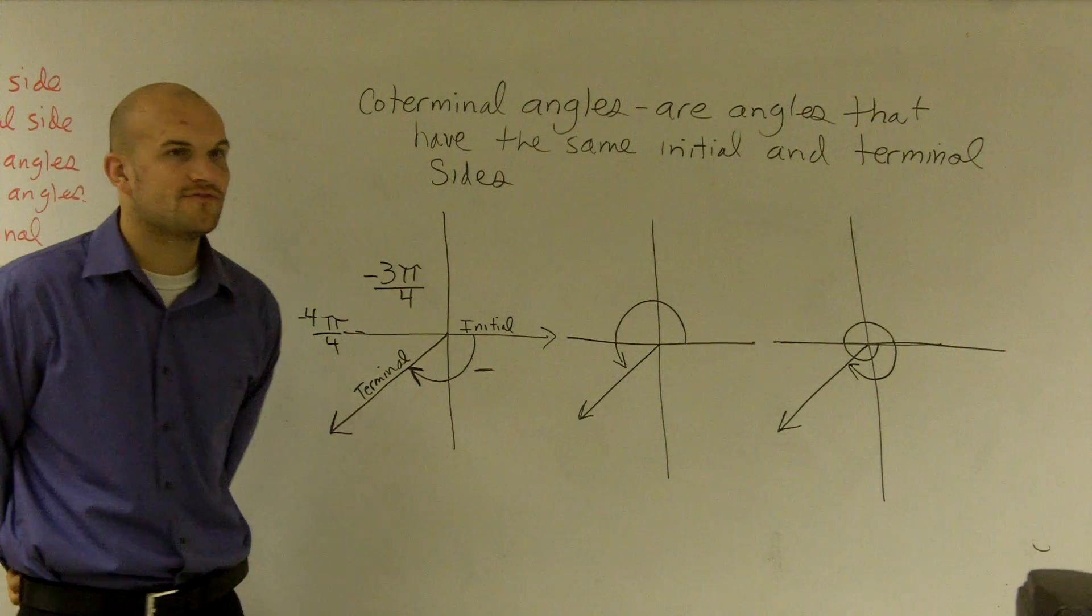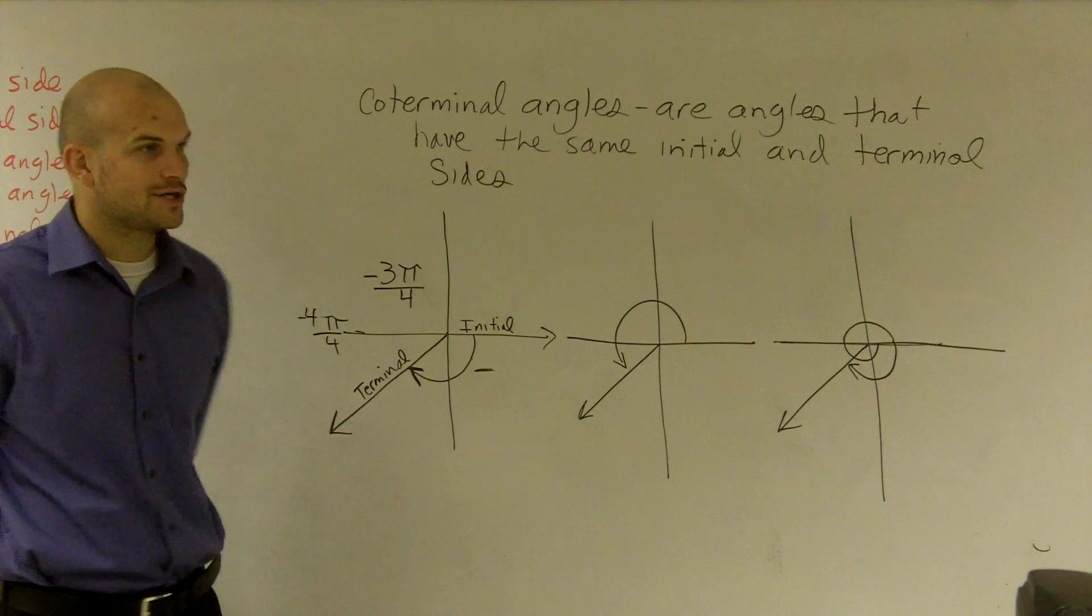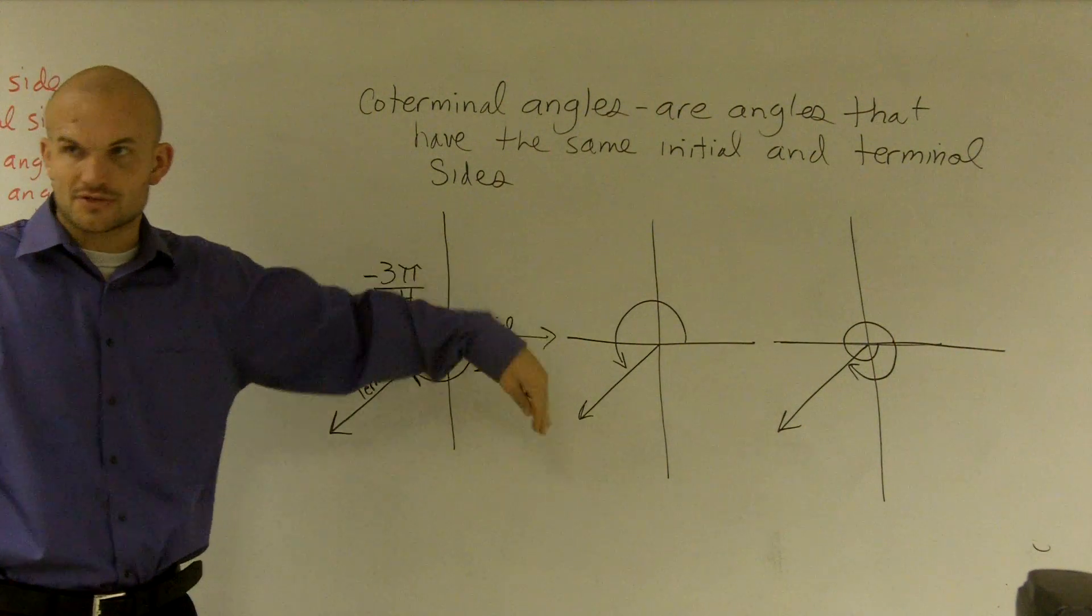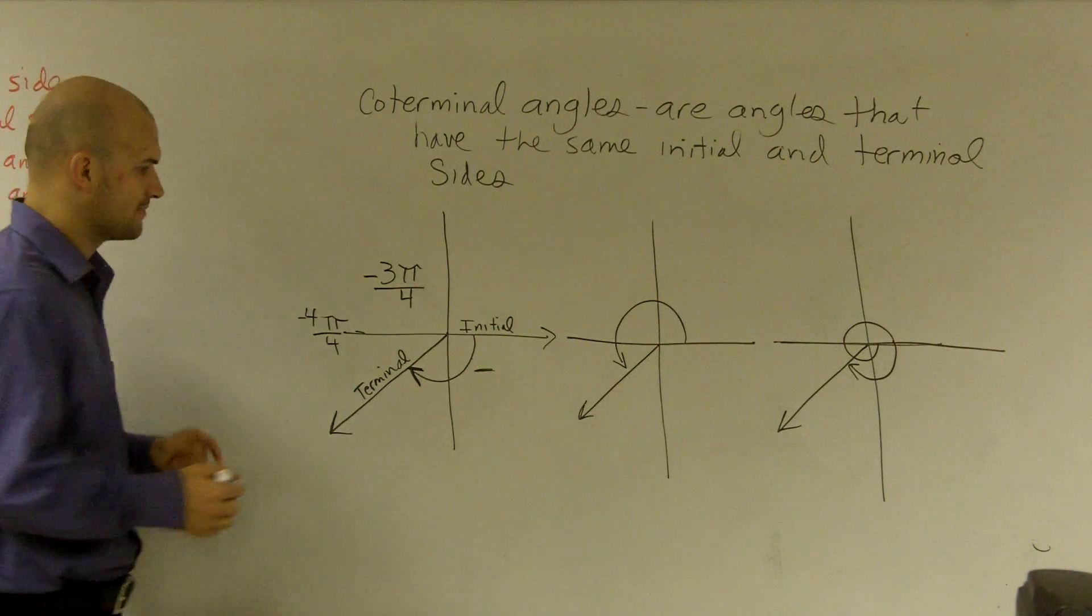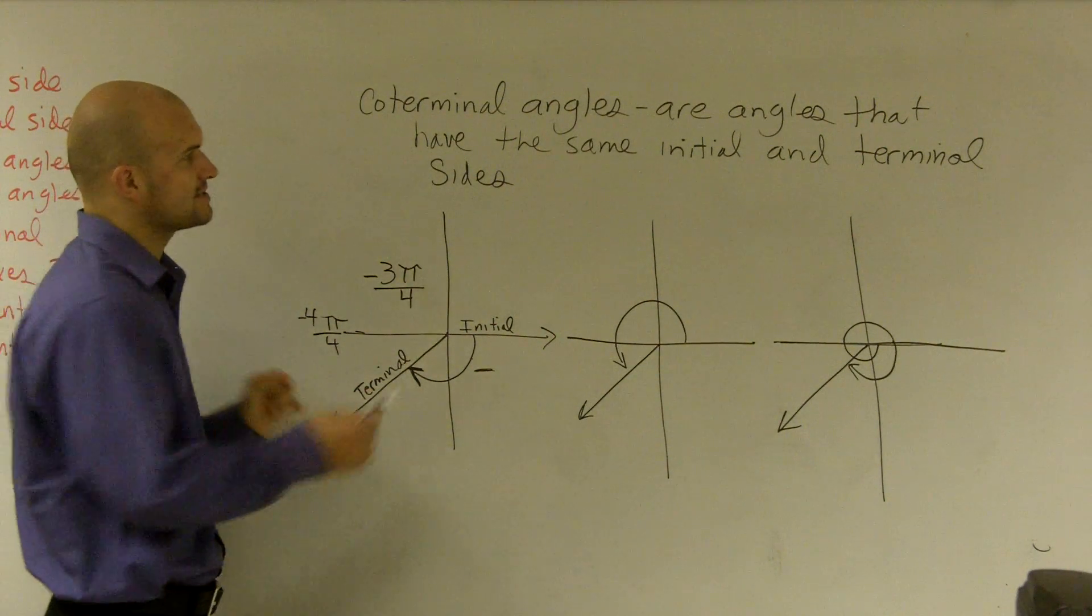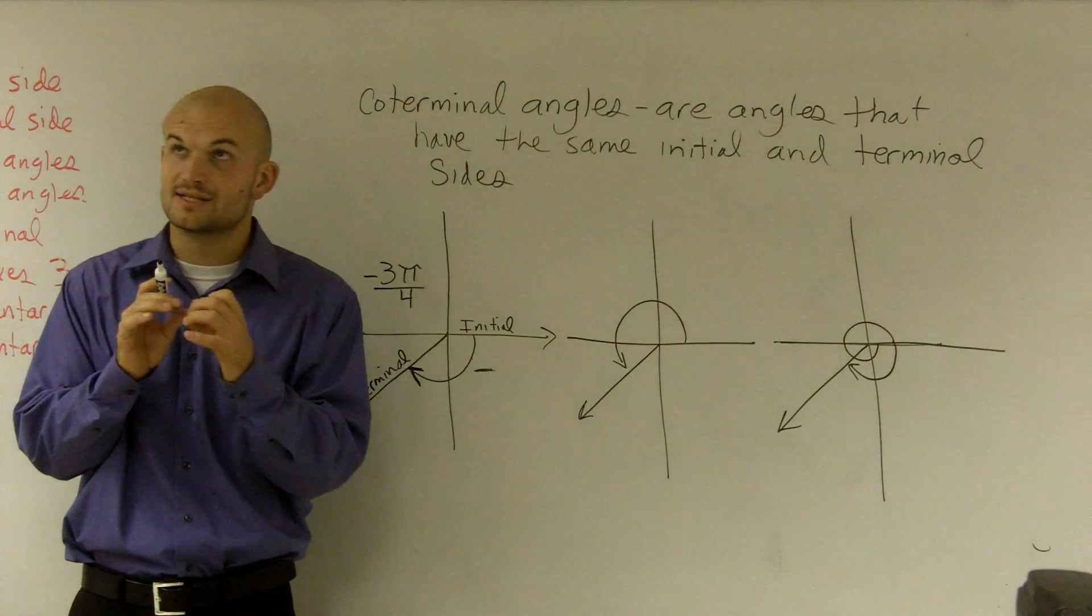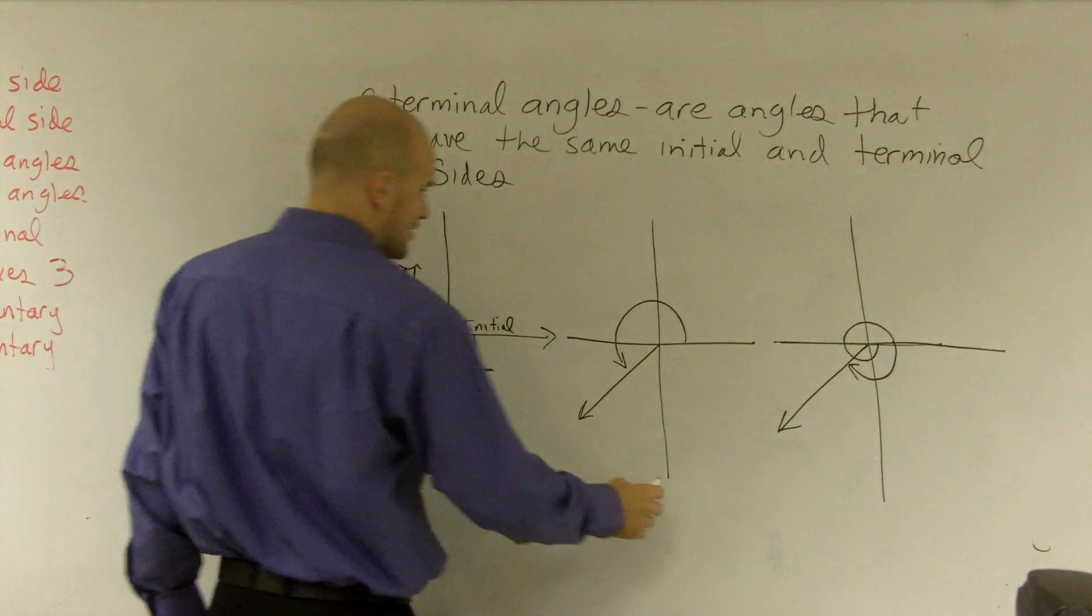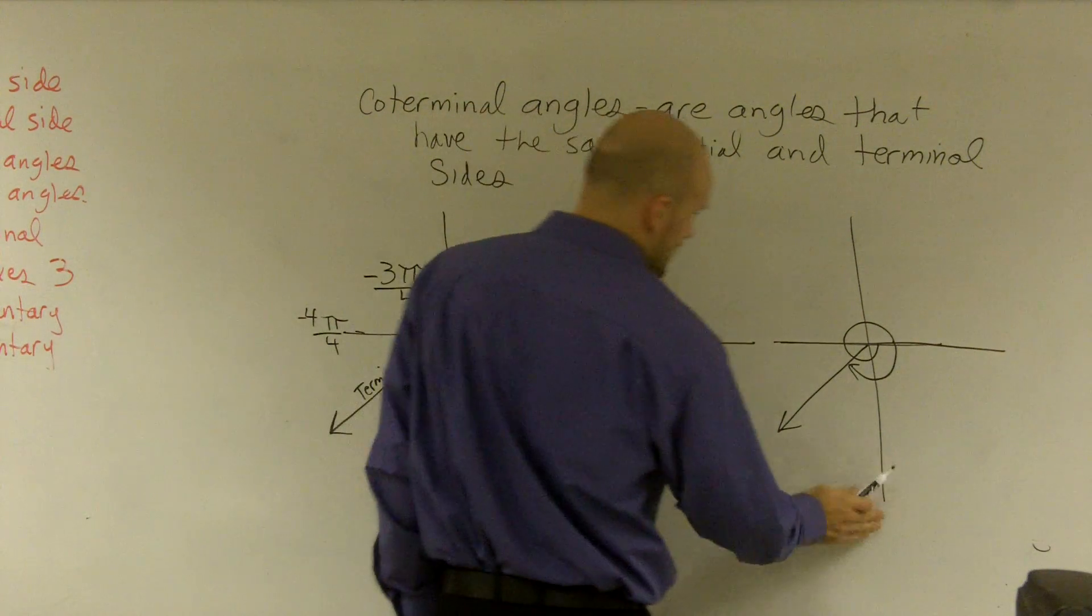So how can we find these angles algebraically? Because we could segment a circle and just count all the sections, right, and see what we would get. But there's also a way we can do this algebraically. And what we're going to do is, since they have the same initial and terminal side, we can add 2π and we can subtract 2π.